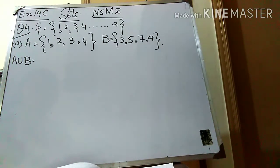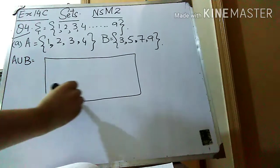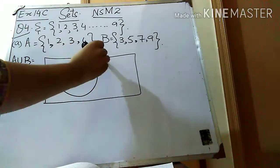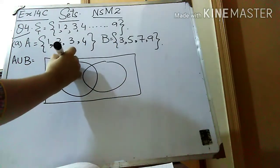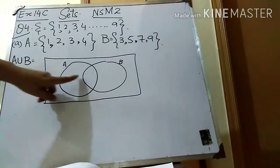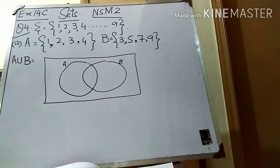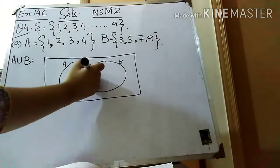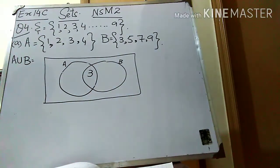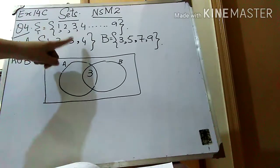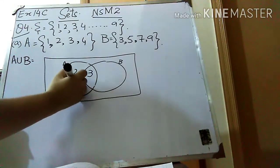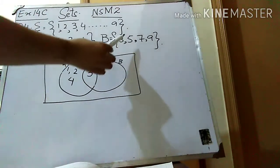Students, remember that whenever you want to find out A union B or A intersection B through a Venn diagram, you need to draw the diagram like this. This rectangular box basically shows the universal set and these two circles show the two sets A and B. In the overlapping area you have to write the factors which are common in both sets. The factor which is common in both sets is 3, so I am going to write 3 over here.